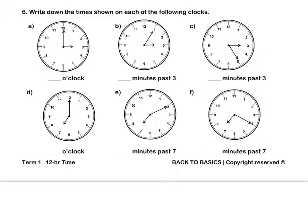Question 6. Write down the times shown on each of the following clocks. A. It is 3 o'clock. The short hand is on the 3. For B, the hour hand is still on the 3. The minute hand has moved to the 1. So it is now 5 minutes past 3.